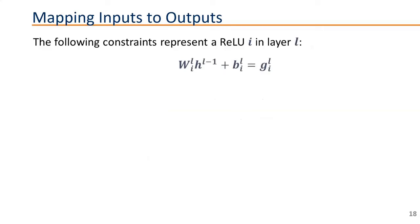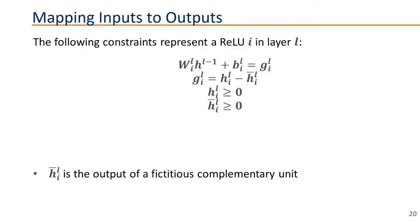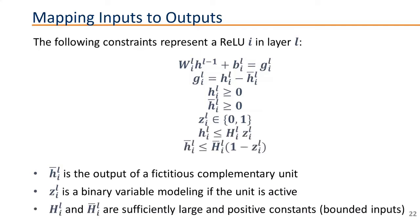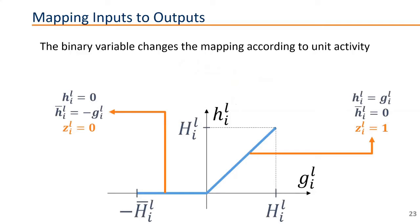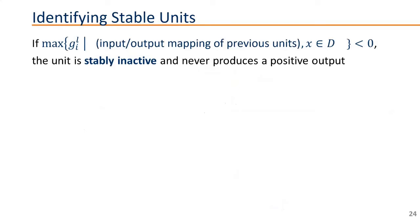Now, how are we going to determine that these units are stable? We're going to do that using mathematical optimization. So we're going to first define a formulation to map inputs to the outputs for every one of the units. So we said that this linear transformation of the inputs of the unit will be equal to this variable g, which we can define as our pre-activation output. Now, g will be equal to the post-activation output h minus the output of a complementary fictitious unit h bar, such that either the real unit is active or the fictitious one is active. Both these units are non-negative. So they have an output that's not negative. And then we have this binary variable telling whether the unit is active or not. And that will limit the output of the unit or of its complement. Graphically, this is what we're doing. If we have a negative value for the pre-activation output, then the binary variable will be equal to 0 and h will be equal to 0. If we have a positive value for the pre-activation output, then h equals g and the variable z equals 1.